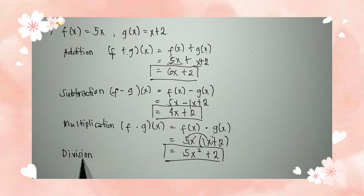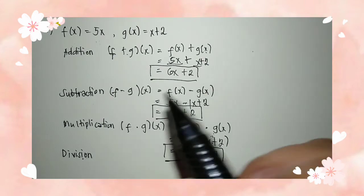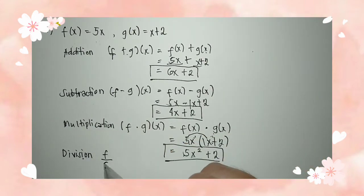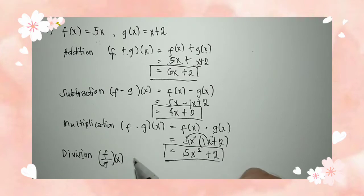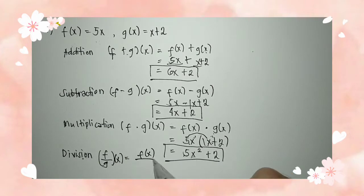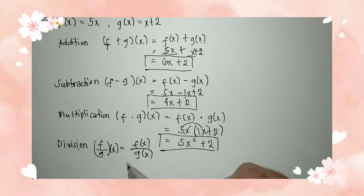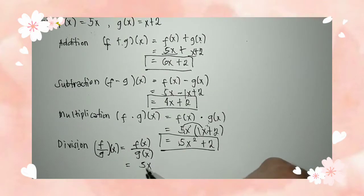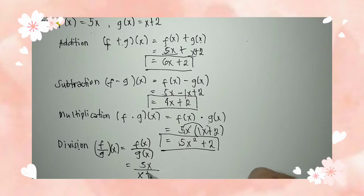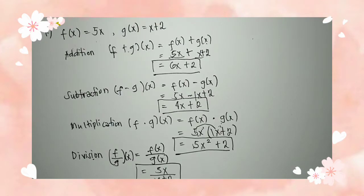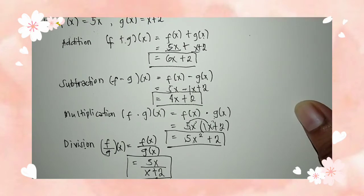Moving on to the division of functions. We have f divided by g of x is equal to f of x divided by g of x. So we have 5x as f of x over x plus 2. We can no longer simplify it, and that is the correct answer.